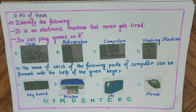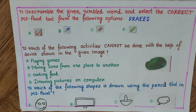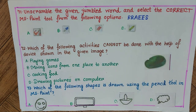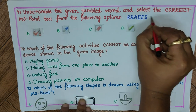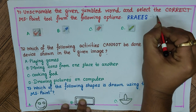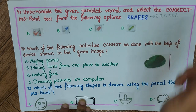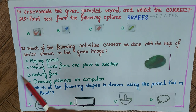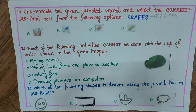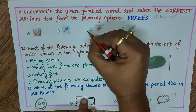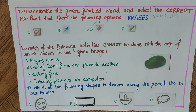Question 71: Unscramble the given jumbled word and select the correct MS Paint tool. The jumbled letters are R-R-A-E-E-S. Unscrambling gives E-R-A-S-E-R, which is eraser. Among the options A, B, C, D, only option C shows the picture of an eraser. The answer is C.